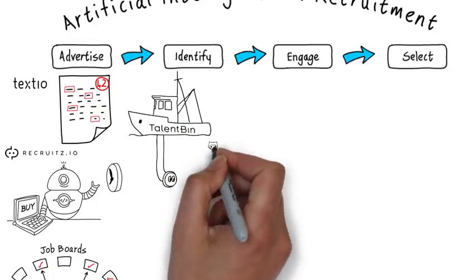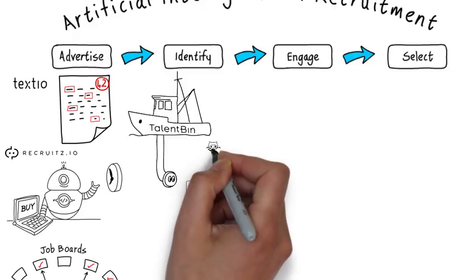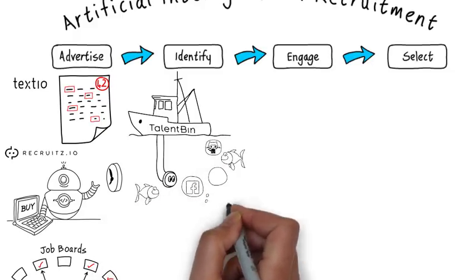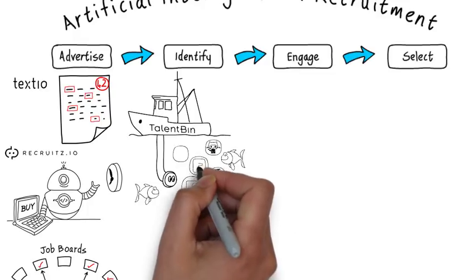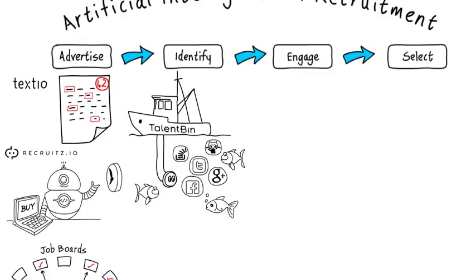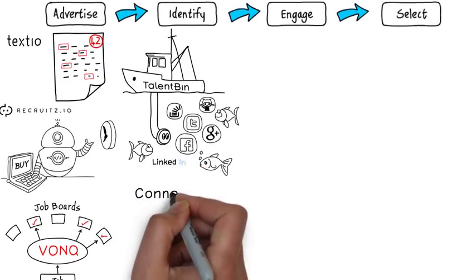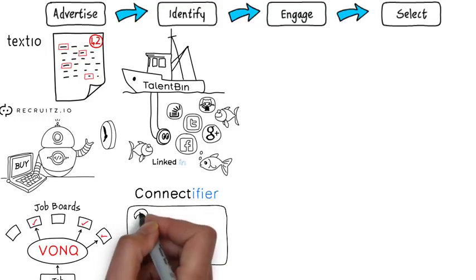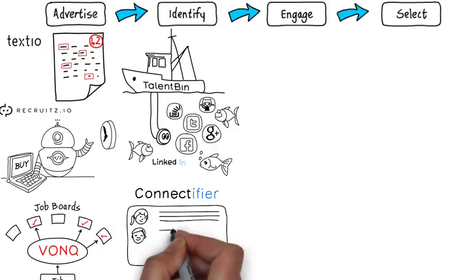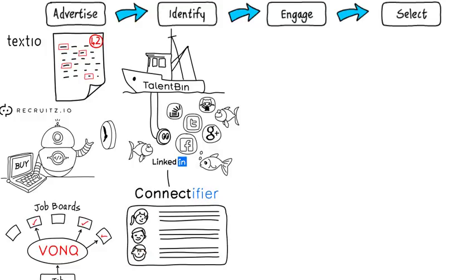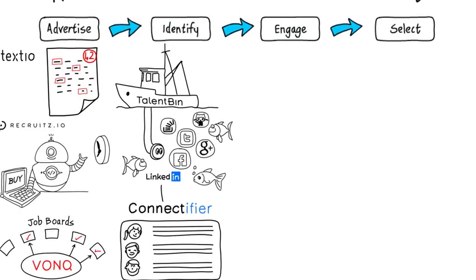Identifying potential is where we intelligently collect data to find prospective candidates. Monster's Talent Bin spiders the web, collecting information from social media sites and industry community sites to create profiles of potential candidates, either passive or active, together with their contact details. Similarly, LinkedIn's Connectifier is used to create passive candidate profiles by collating, sorting, and prioritizing LinkedIn subscriber data.